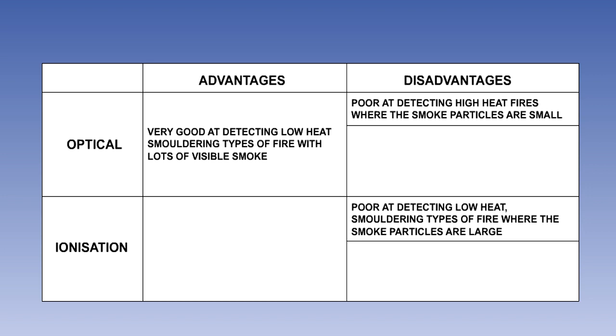The ionization type of detector has the opposite properties. It is very slow to detect smoldering fires, but quickly detects the smoke produced by high heat fires.